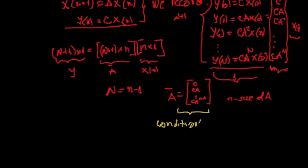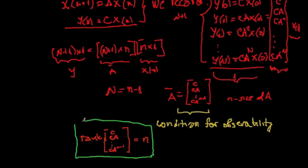The condition for observability is the condition that we can invert this matrix A hat. In other words, we have the rank of C, CA, CA², and CA^(n-1). It has to be equal n. So, this is the condition for observability. That is how we determine whether we have observability in our system.